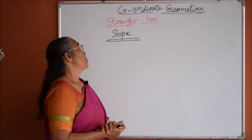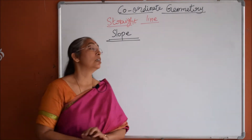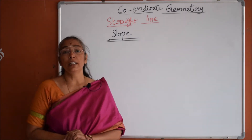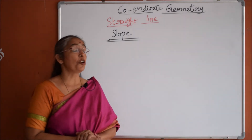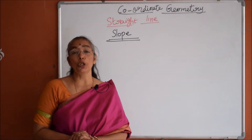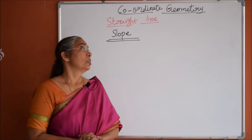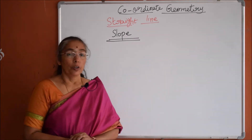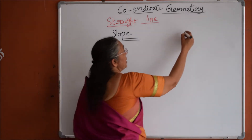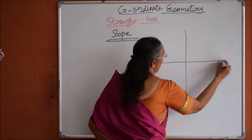Namaskaram. Now let us see what is slope of the line. Before we go into the equation of straight lines, we should know about the concept of slope. Slope is nothing but similar to the inclination of the line — specifically, tan of the inclination of the line.